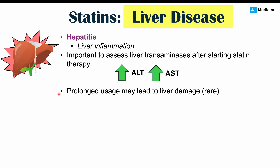In the case where there is true hepatitis due to statins and you were to continue use, this can lead to liver damage, although this is going to be rare. Most of the time when patients start statins, they will have no symptoms but will have a transiently elevated level of ALT and AST, which then come back to normal. The problem is that if patients have ALT and AST that are three times above the upper limit of normal, then we know this is a true issue.